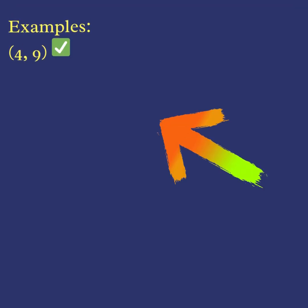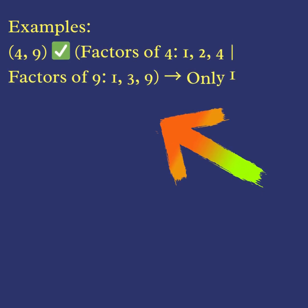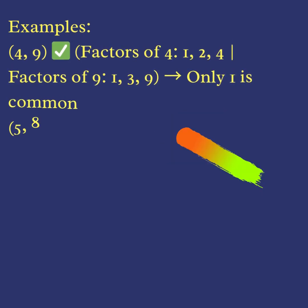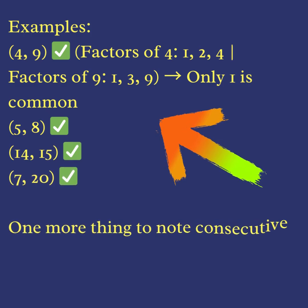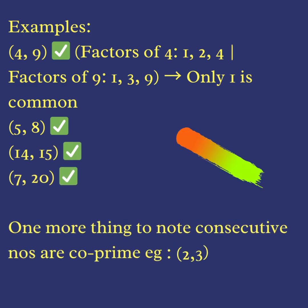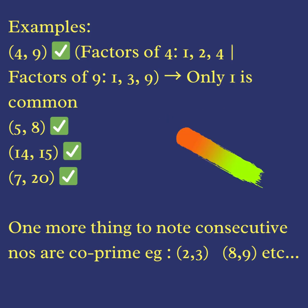Examples of co-prime numbers: four and nine — factors of four are one, two, four; factors of nine are one, three, nine; only one is common. Other examples include five and eight, fourteen and fifteen, and seven and twenty.